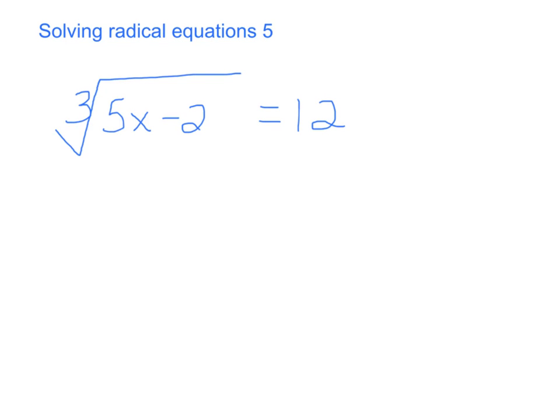What do you think the first thing we should do in order to solve this? We've got the cube root of 5x minus 2 equals 12. In order for us to get rid of this cubed root, we need to cube both sides.